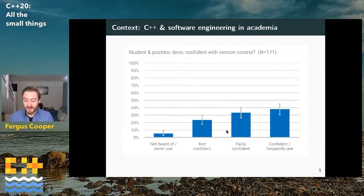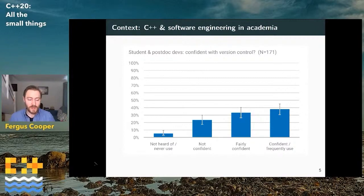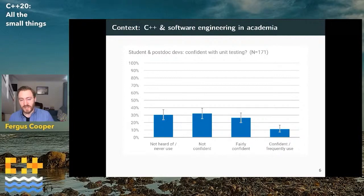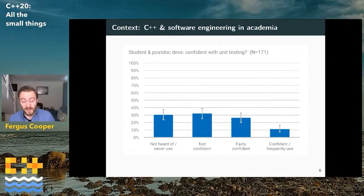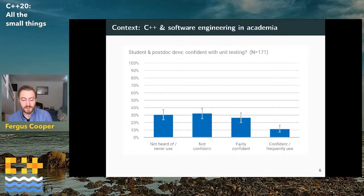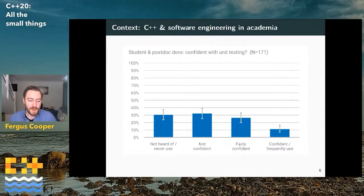We asked students and postdoctoral researchers — the people actually writing code day-to-day — whether they were confident with version control. Nearly 40% said they were confident and used it frequently, but a substantial minority were either not confident or had never heard of or never used version control. And these are people who are regularly writing software. The story gets worse the more technical the things you ask about: confident with unit testing — 30% had never heard of it or never used it, and well under half of people regularly developing software at Oxford were not confident in unit testing.